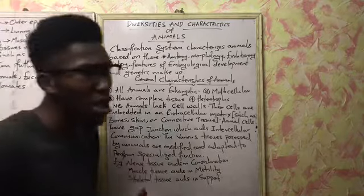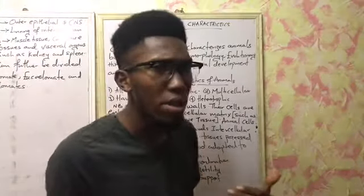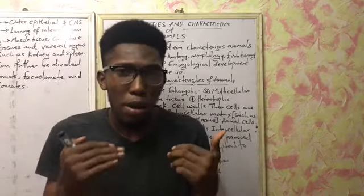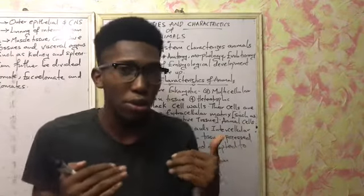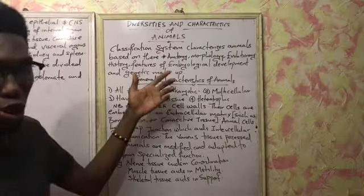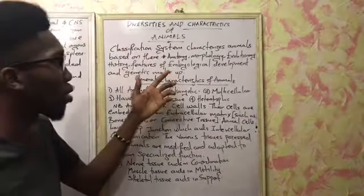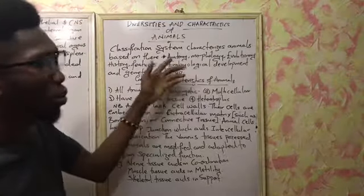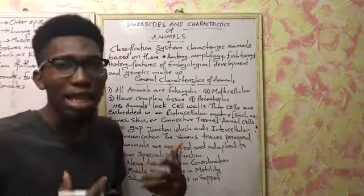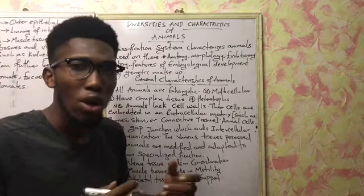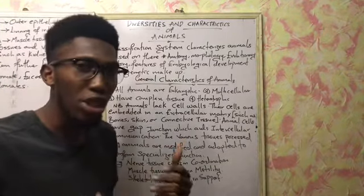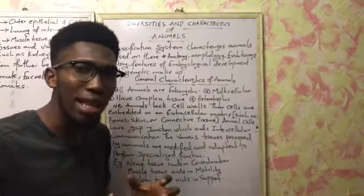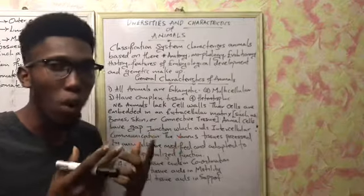You classify organisms based on certain guidelines or certain grounds. Some of those characteristics or bases for classification are anatomy and morphology. When we say anatomy, that means we're talking about the internal differences in the internal structures and build-up of different species of organisms. Morphology looks at the external build-up of that organism.